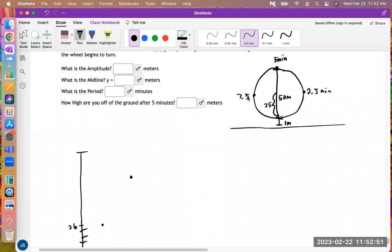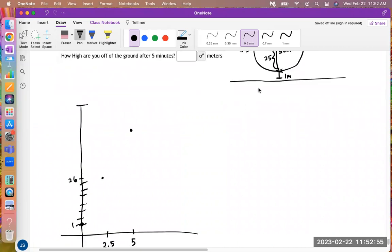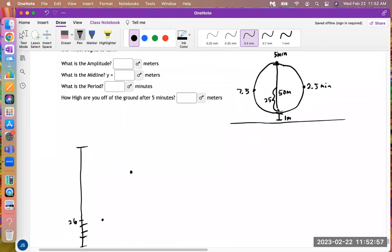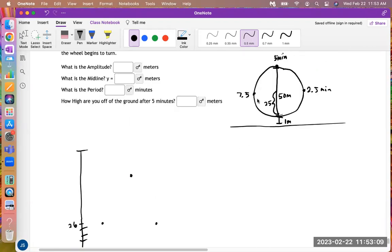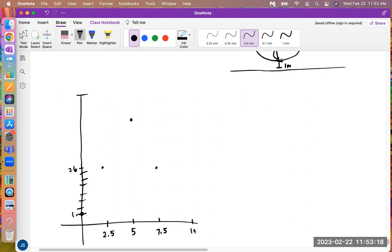At 7.5 minutes, which is three-fourths the way around, it's going to be back at 26, right? Because it's 25 plus one more meter off the ground. And then when you go all the way around, so you go all the way around the circle, you're back at the bottom in 10 minute frame. So it's going to be back down here at one foot off the ground at the bottom.